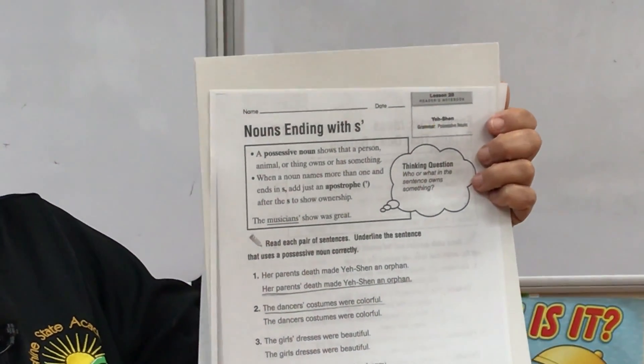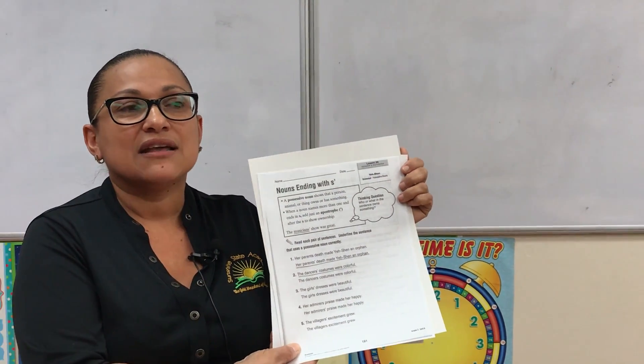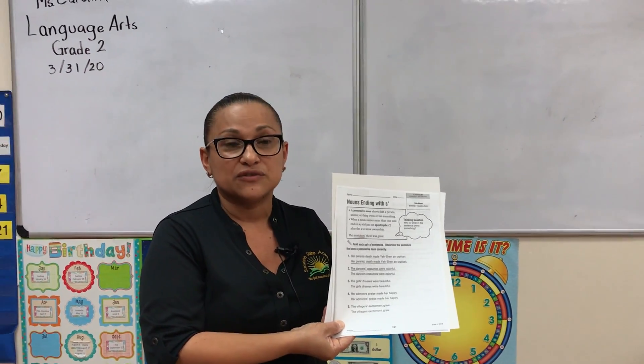As you can see, possessive nouns can be used for singular and plural, with the difference being where you place your apostrophe.